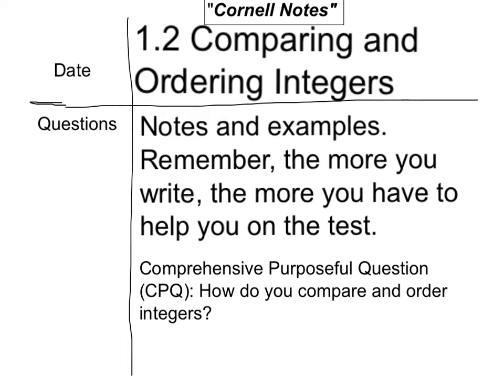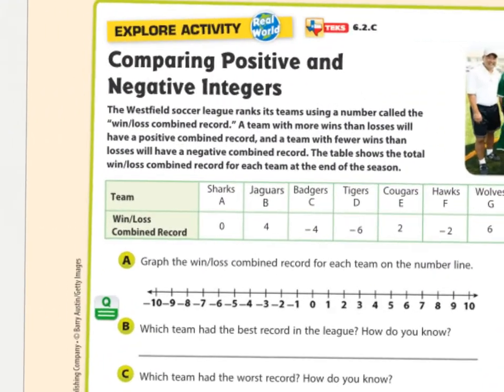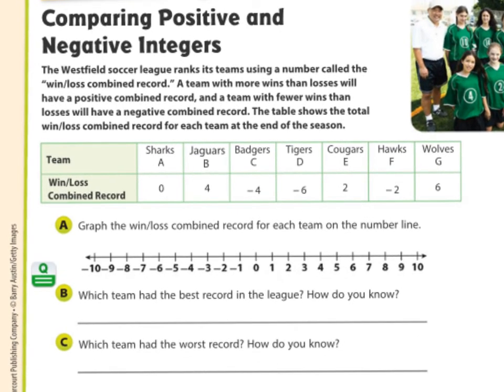For this video, you're going to be concentrating on answering this question: how do you compare and order integers? When we talk about integers, we're talking about negative numbers and positive numbers. When we're comparing them, we can use the number line to do that.